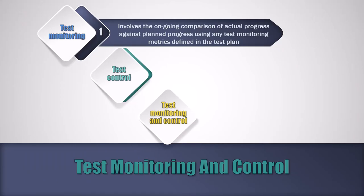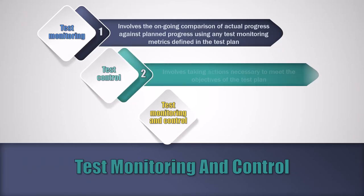The next term is test control. It involves taking actions necessary to meet the objectives of the test plan. What it means is if we are not able to achieve the deadline, then we can increase the deadline or we can increase the resource to meet the deadline.